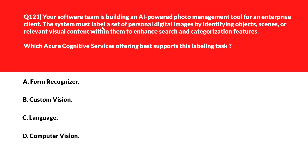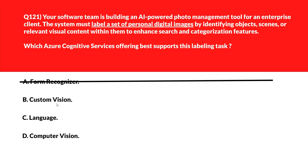We'll move to option B: Custom Vision. Custom Vision allows training a model to assign custom labels to images based on visual features, aligning with the goal of labeling a photo collection — let's keep this. Option C is Language, which processes natural language text, not image content or visual data — incorrect.